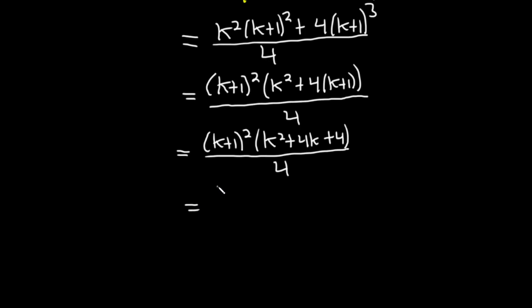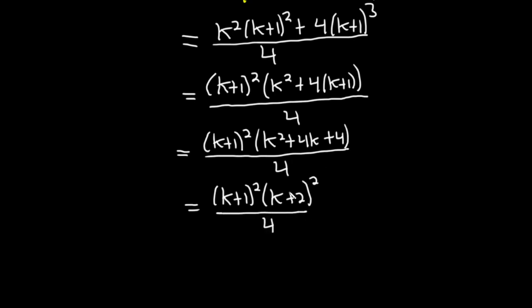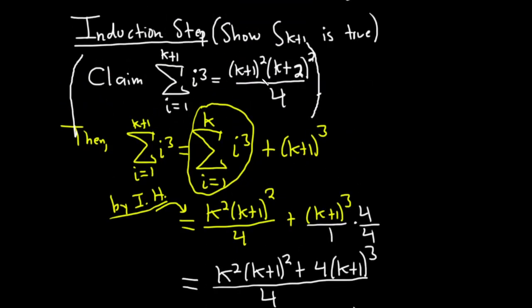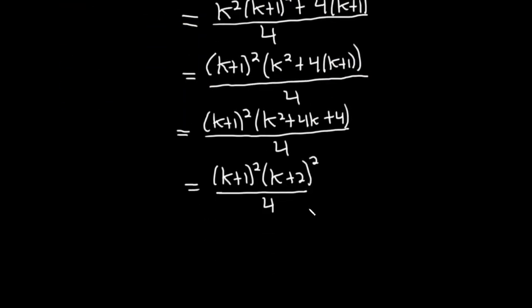This is k plus 1 squared times a perfect square trinomial — k squared plus 4k plus 4 — which factors as k plus 2 times k plus 2, giving k plus 2 squared. So this equals k plus 1 squared times k plus 2 squared over 4, which is precisely what we had to show — exactly the claim. We've shown that our statement is true for k plus 1, so S sub k plus 1 is true.